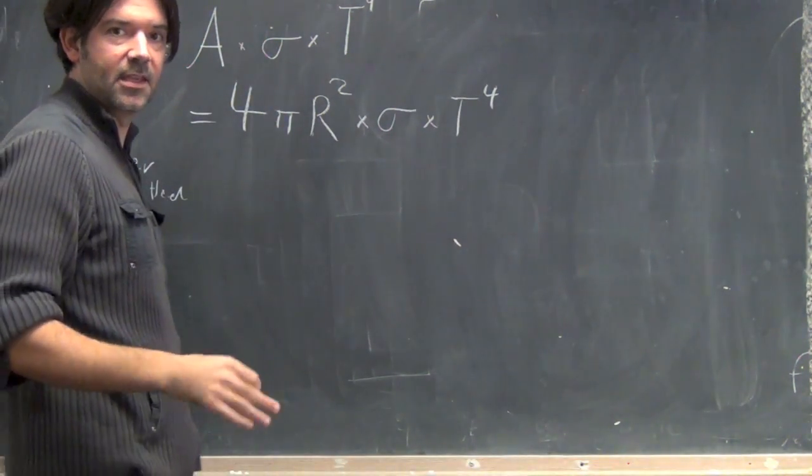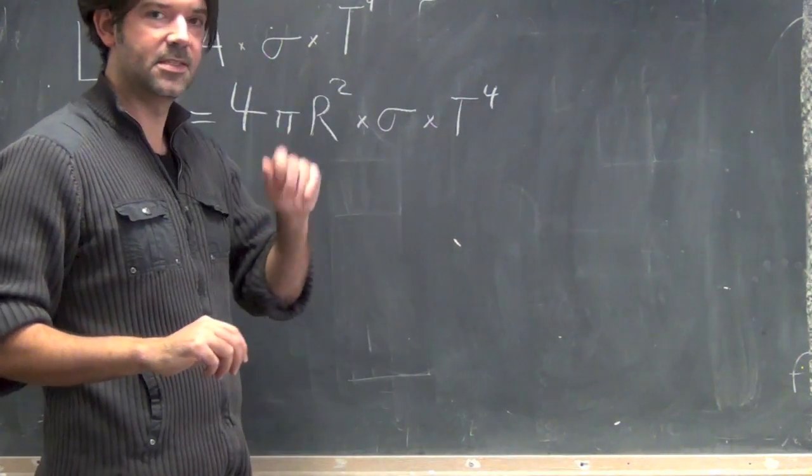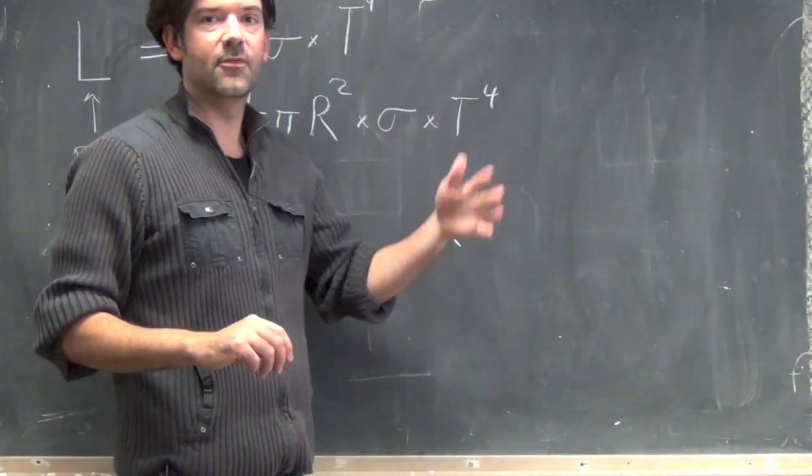4πr² being the surface area of the sphere, sigma again the Stefan-Boltzmann constant, and T to the fourth the temperature of the star.